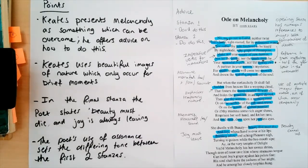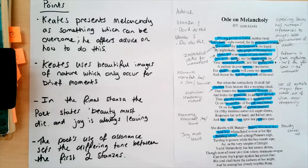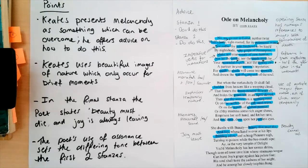Based on my annotations of the poem, I've come up with four main points that I'm going to put in my paragraph. They all link cohesively to my topic sentence so it's all going to flow coherently, and I know that I've got evidence to support all of these points.